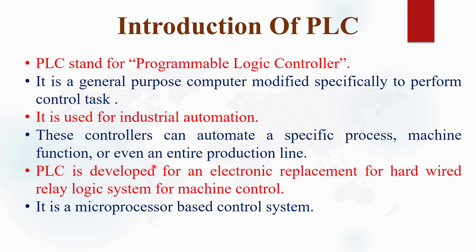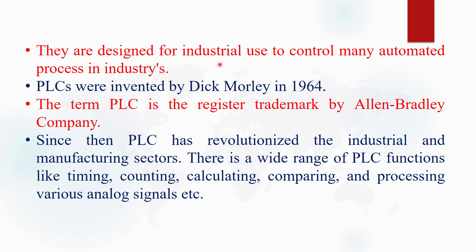These controllers can automate a specific process, machine function, or even an entire production line. PLC is basically used for automatic controlling systems — used as a process control or distribution control system. PLC was developed as an electronic replacement for hardware relay logic systems for machine control. It is basically a microprocessor-based control system.